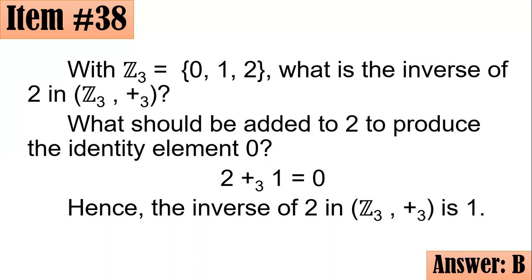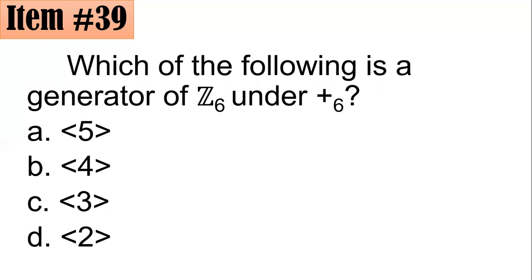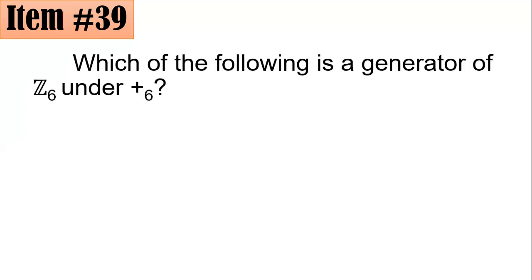Number 39. Which of the following is a generator of Z₆ under addition modulo 6? When we say generator, if you operate that same number to itself as many times as you wish, for this case under addition modulo 6, it should generate all the elements of Z₆. Is it 5, 4, 3, or 2?